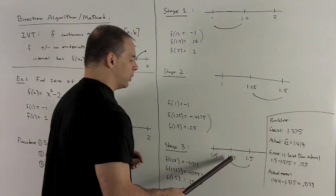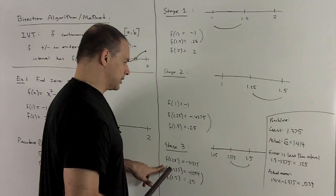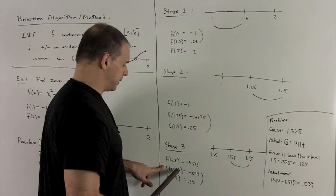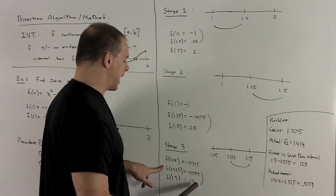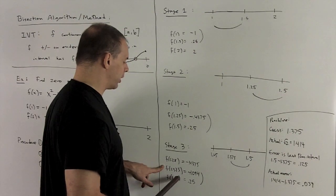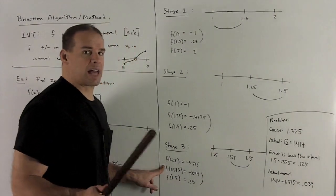I go to stage 3. For this interval, the midpoint is going to be 1.375. If I was going to go even further, I would take the interval - this is giving me a negative number, so we would pick the positive again. So I would go with the interval 1.375 to 1.5 and keep going on and on. But for now, let's stop at stage 3.